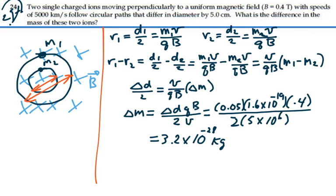That is the difference in mass between these two ions: 3.2 times 10 to the minus 28 kilograms.